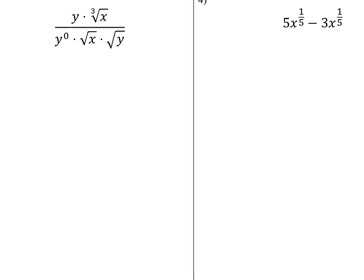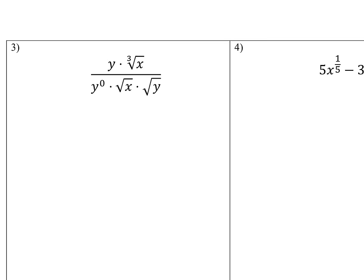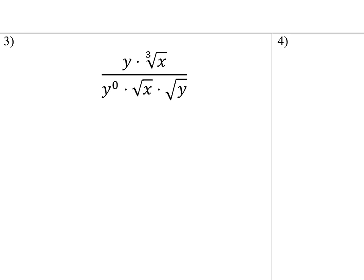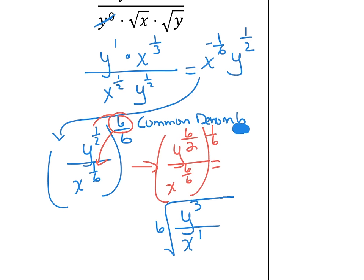Try this one on your own. Make everything rational exponents and reduce normally. Here's the answer: the common denominator was 6, so the 6 is on the outside. Divide through — it's the sixth root of y cubed. That's all there is to it.